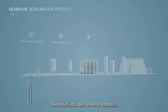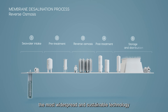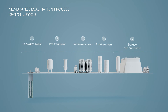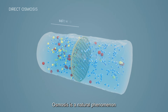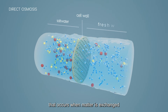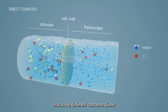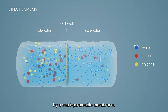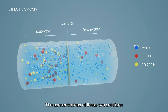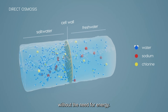The latter includes reverse osmosis, the most widespread and sustainable technology available today. Osmosis is a natural phenomenon that occurs when matter is exchanged between two solutions that have different concentrations and which are separated by a semi-permeable membrane. The concentrations of these two solutions become balanced spontaneously without the need for energy.